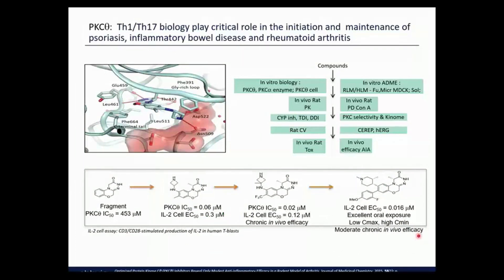I decided to illustrate this with an actual example from work we've done related to inhibitors of PKC theta. This is an intracellular kinase expressed in T cells, involved in both the differentiation and proliferation of T cells. T cell function is critical to various autoimmune diseases, particularly psoriasis, inflammatory bowel disease like Crohn's or ulcerative colitis, and rheumatoid arthritis. For a medicinal chemist, what we care about is the fact that this is a kinase — you've got your typical hinge interaction — and this was one of our more advanced compounds shown in a protein crystal structure.